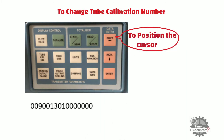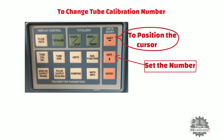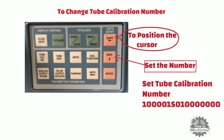Press the shift button to position the cursor. For example, when you press the shift button the first time, the cursor will be on the first digit from the left. Press the increment button to set the number. Once the first digit is set, press shift again to go to the next digit, then press increment to set that number. Repeat until the desired number is set and press enter to save. For example, when tube calibration number 1000000150100000 is set, press enter to save it in the transmitter.